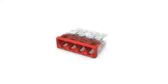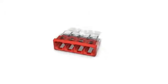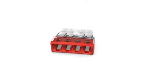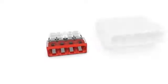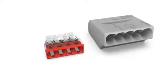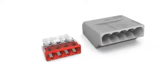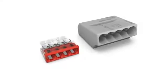Wago's 2273 series compact push wire connectors for junction boxes provide maximum impact in minimum space. The 2273 series is approximately fifty percent smaller than the original 273 series which has proven itself in billions of applications.